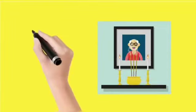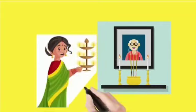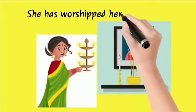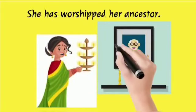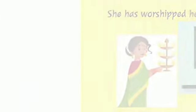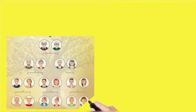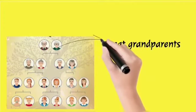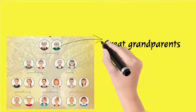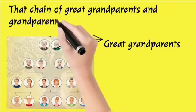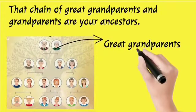The second example: 'She has worshipped her ancestors.' The final one: a family tree shows great-grandparents and grandparents — that chain of great-grandparents and grandparents are your ancestors.